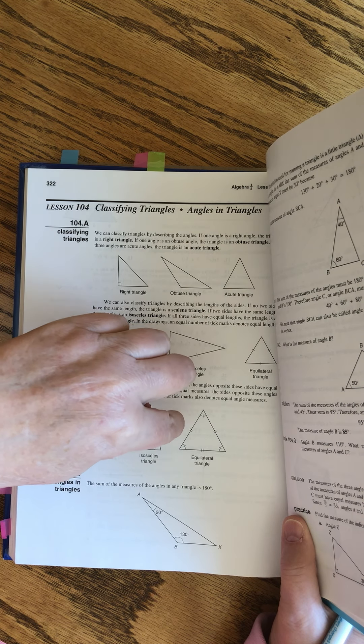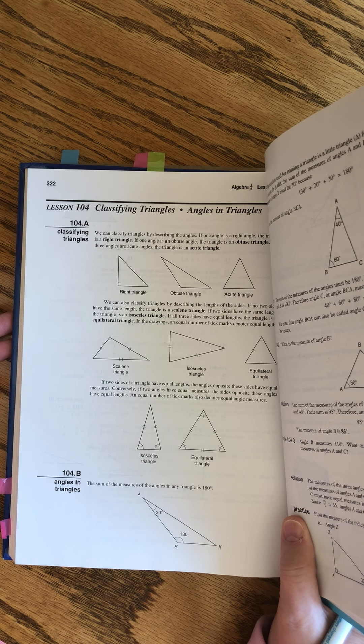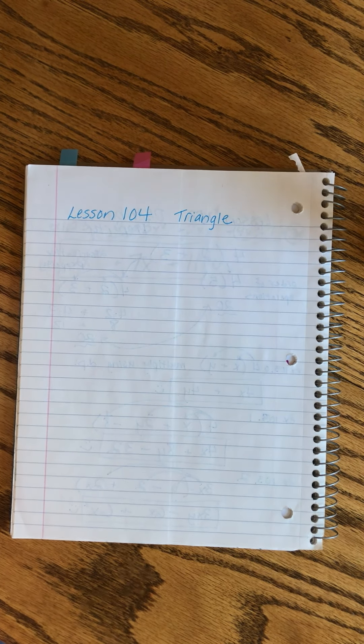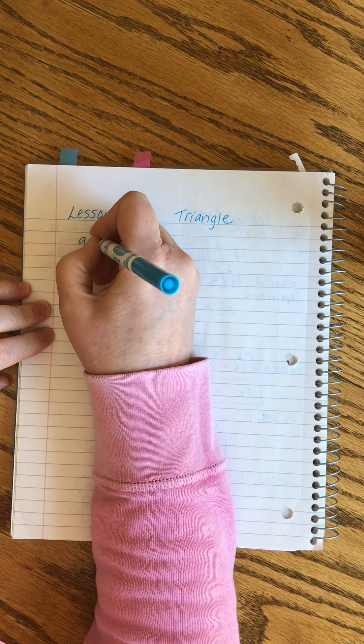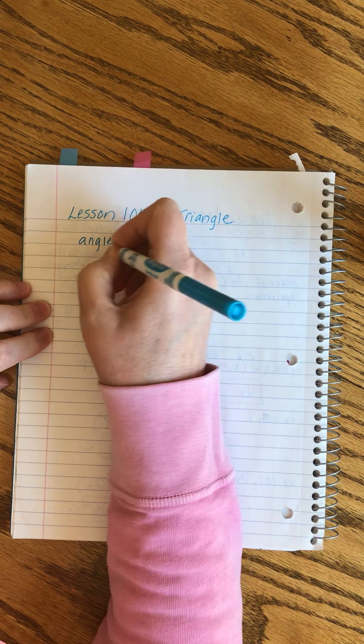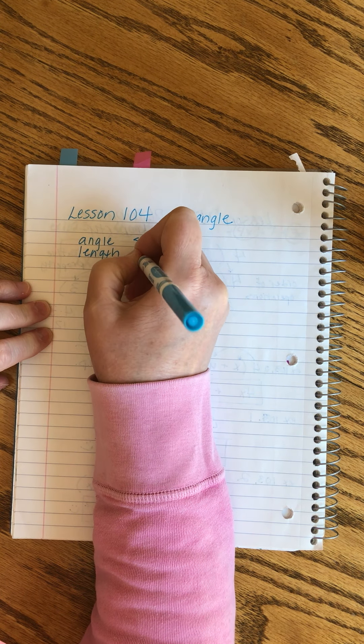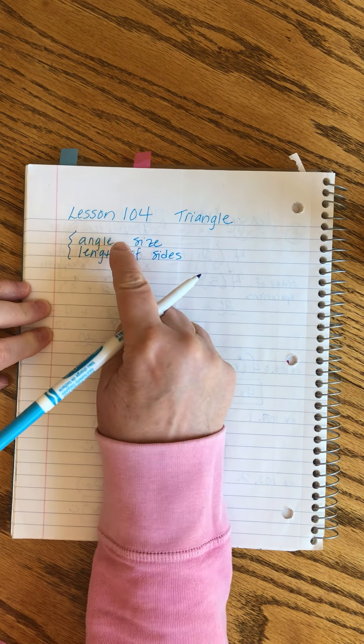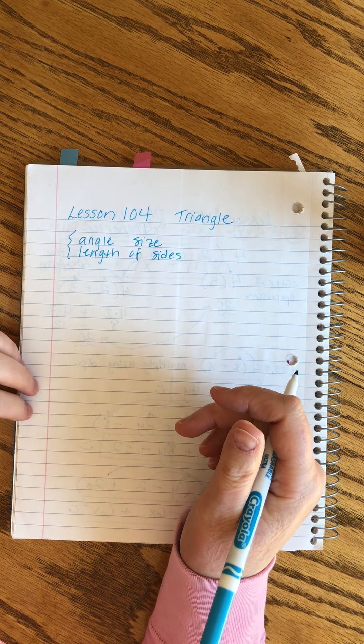That's the way we can classify triangles. We can classify them by angle size and we can classify them by the length of the sides. It's two different aspects of the triangles that we can sort them by.